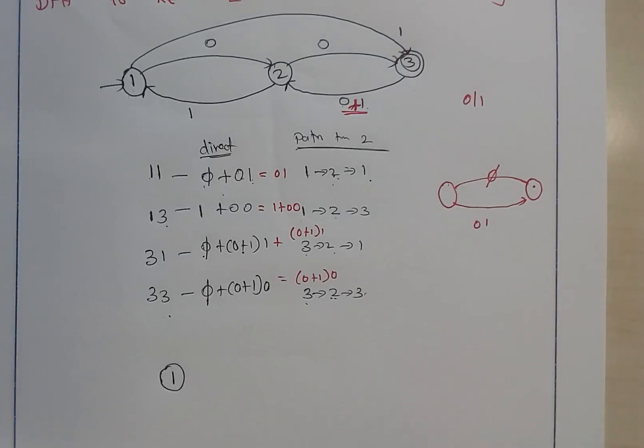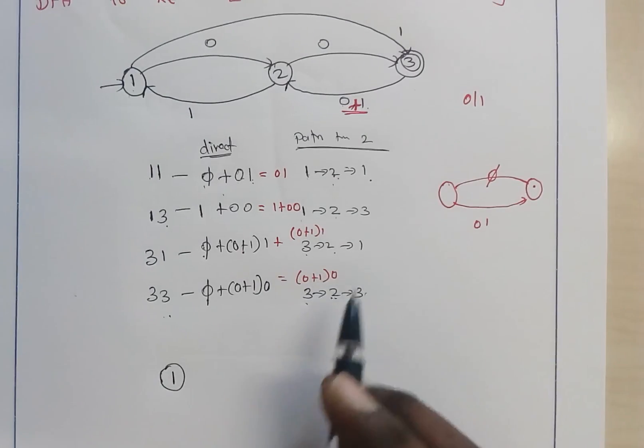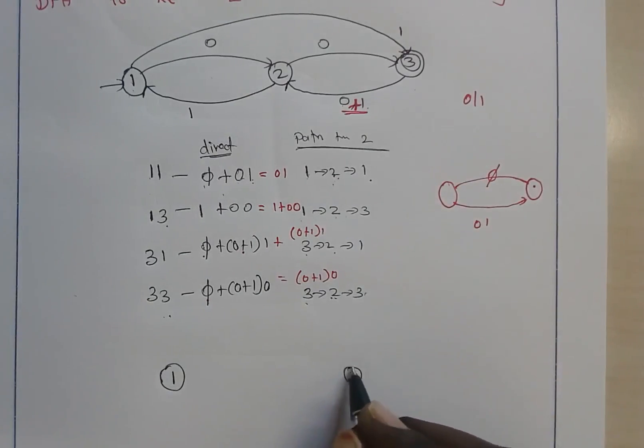The given transition diagram is redefined by eliminating the effect of state 2, so we are going to just have the starting state 1 and the final state 3.